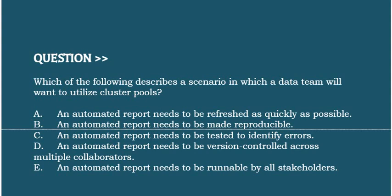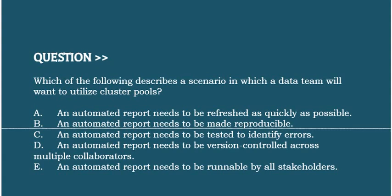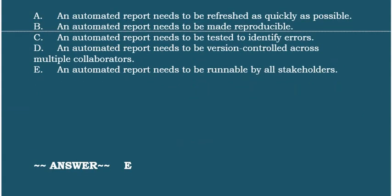Option C: an automated report needs to be tested to identify errors. Option D: an automated report needs to be version controlled across multiple collaborators. Option E: an automated report needs to be runnable by all stakeholders. Correct answer is Option A.